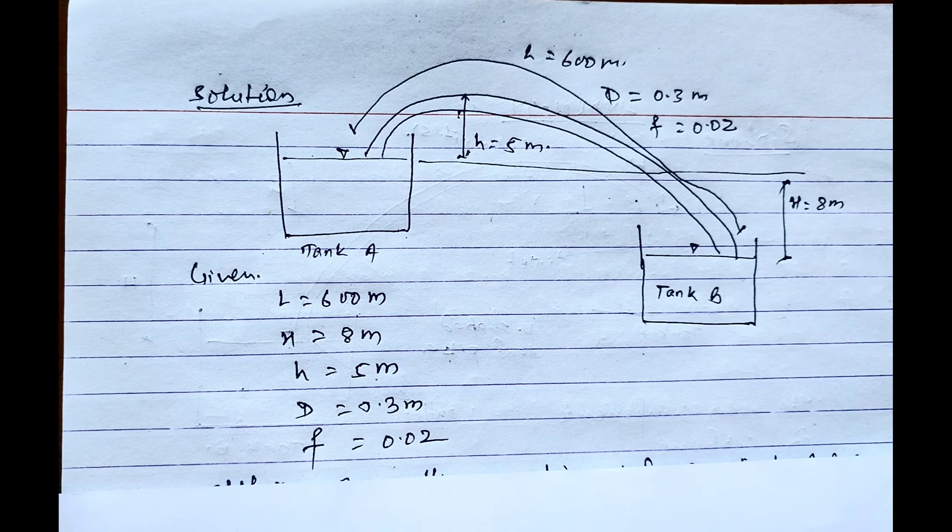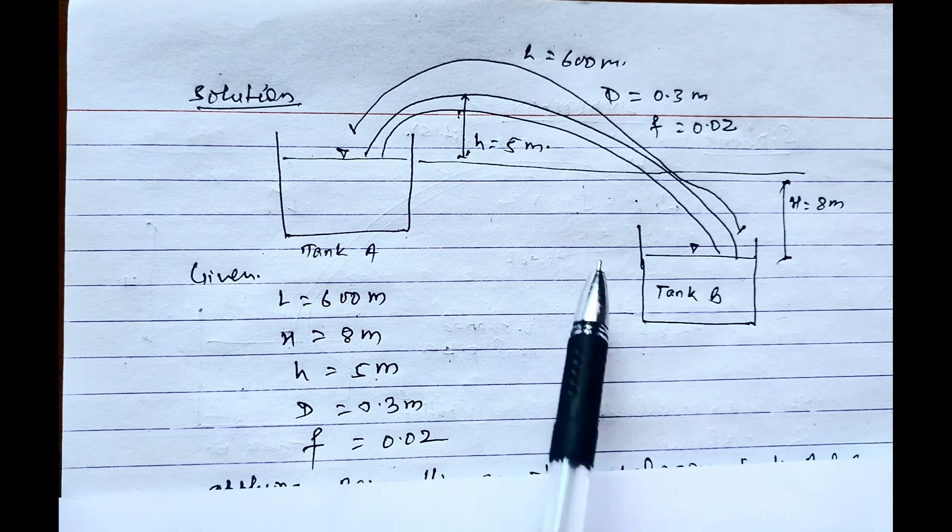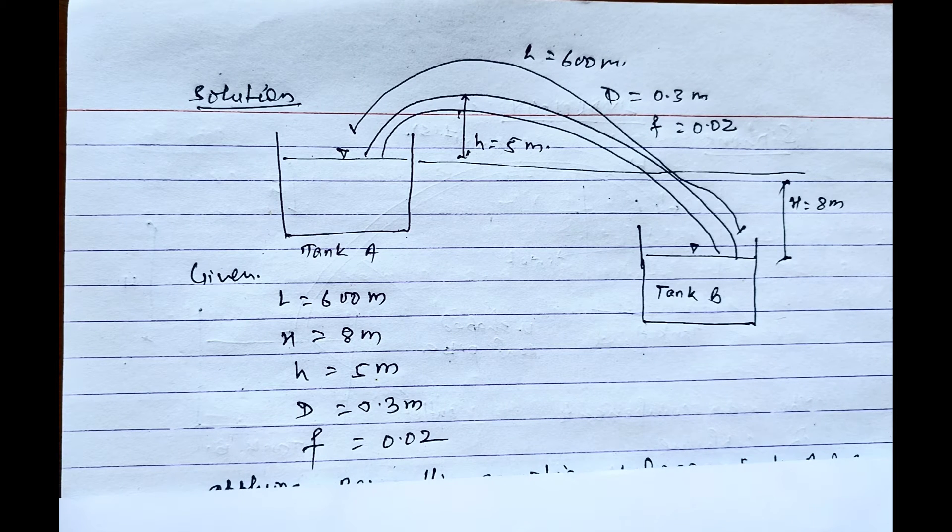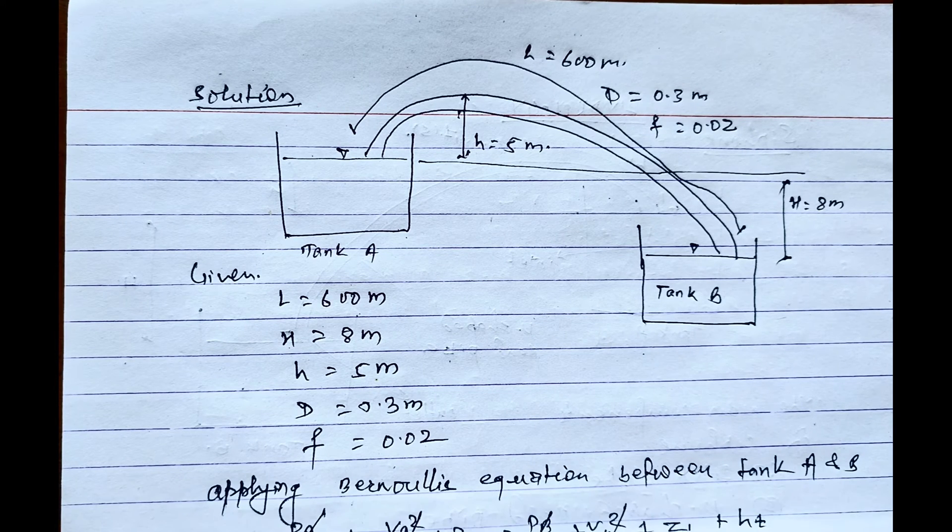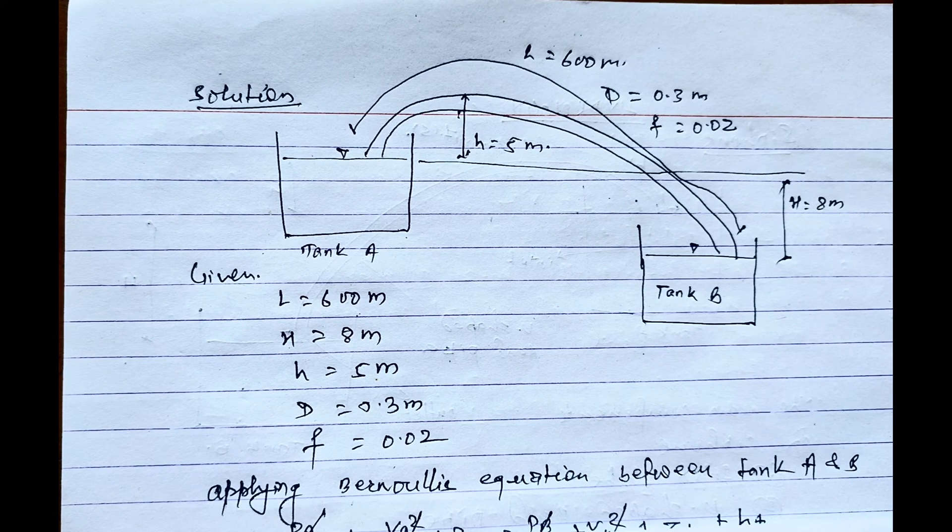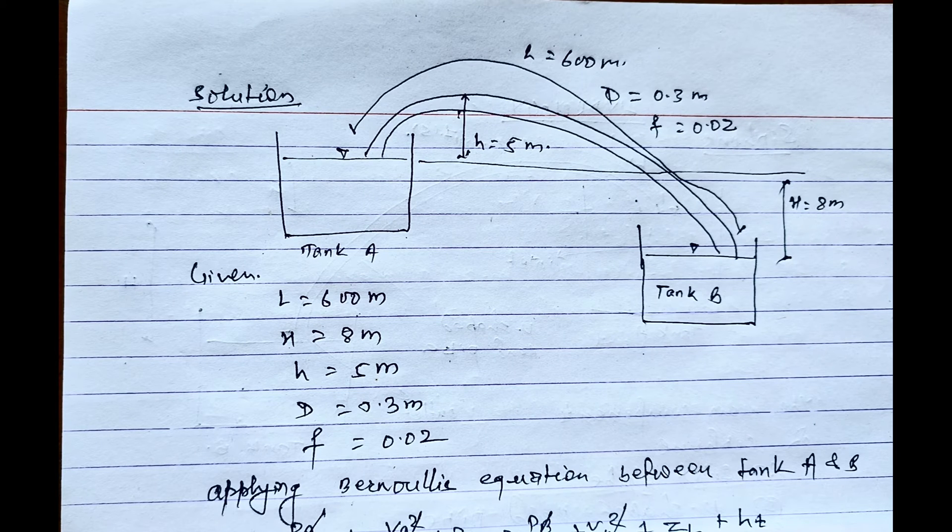As per the question, the diagram of the siphon formed is as per this. So applying the Bernoulli's equation between A and B: Pa/γ + Va²/2g + Za equals Pb/γ + Vb²/2g + Zb equals HL, where Pa and Pb are equal in this context.